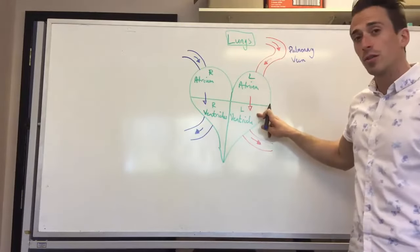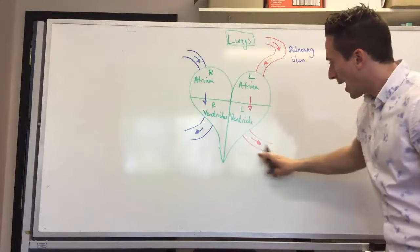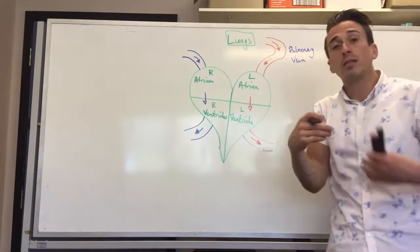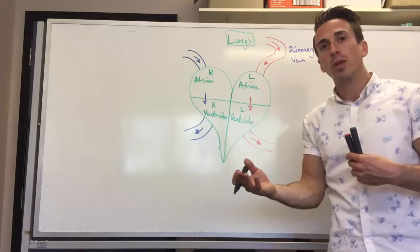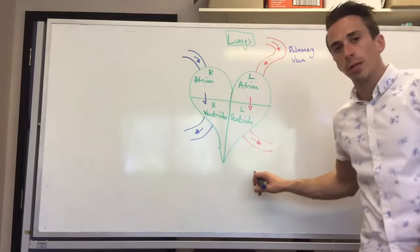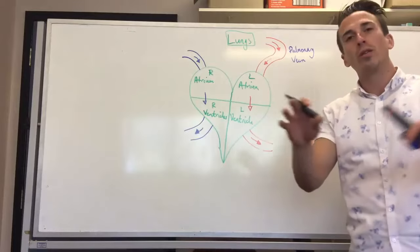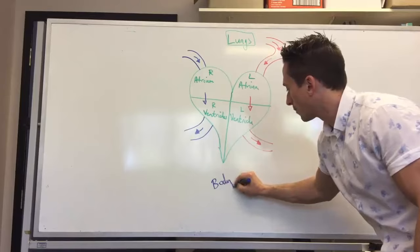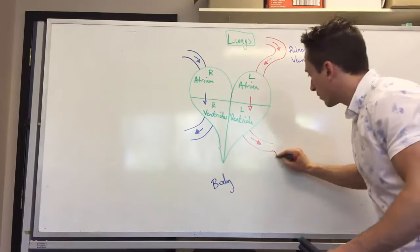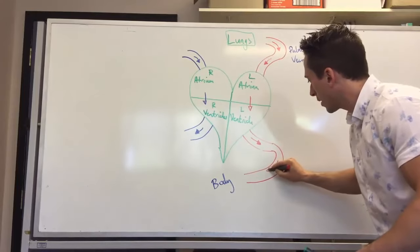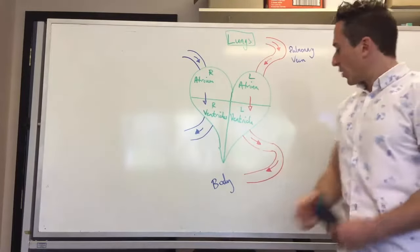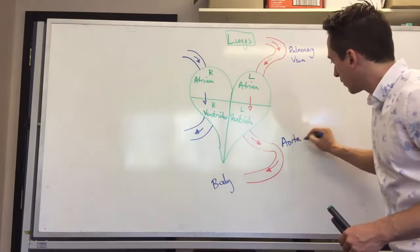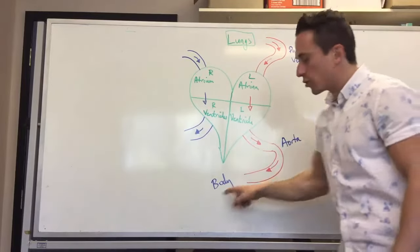That left atrium will contract and push blood into the left ventricle. The left ventricle will contract and push blood out — which means this is an artery. Oxygenated blood needs to go to parts of the body that require oxygen, which is everywhere. So this vessel ultimately sends oxygenated blood to all the tissues of the body. This vessel is called the aorta, and it takes oxygenated blood to the body.